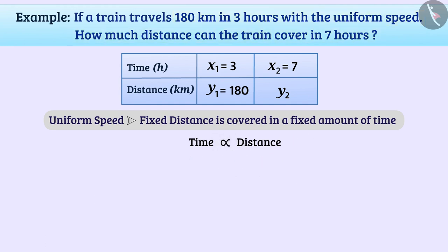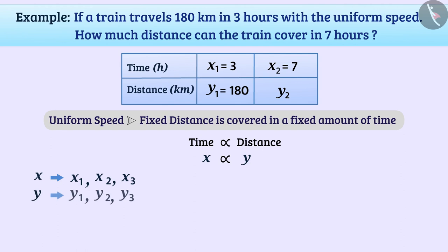In the last video, we learned that if x is directly proportional to y, and if the values of x are x1, x2, x3 and so on, and the values of corresponding y are y1, y2, y3 and so on, then x1/y1 = x2/y2 = x3/y3 and so on.